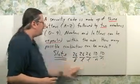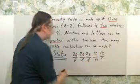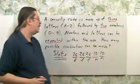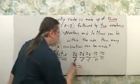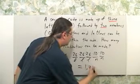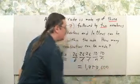When you want to compute this, you're going to multiply these numbers together. So it's going to be 26 times 26 times 26 times 10 times 10. The answer is going to be 1,757,600 ways.